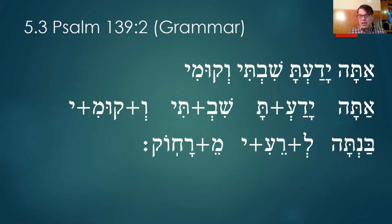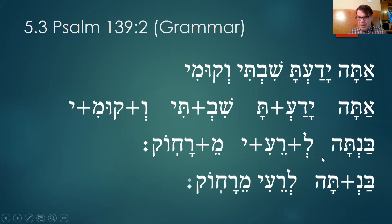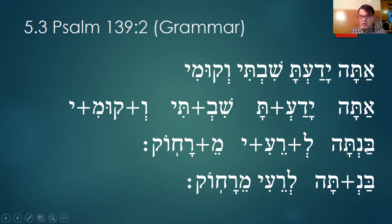Our next line — I somehow got these reversed. So this is the word banta, which is broken down into you — ta — and being, which means 'to discern' or 'to understand.' These two items got swapped on the slide, but we can figure it out. The ee suffix — we've seen ee several times. What does it mean when we see ee? It means 'my.'